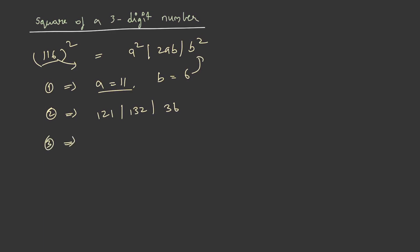Now, in the third step, it is similar to what we have done. 116² will be equal to take 6 as it is, add 3 to the previous column, you will be getting 135. So, take 5 and add 13 to the previous column and you will be getting 134. So, square of 116 is equal to 13456.